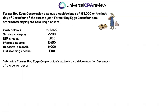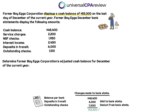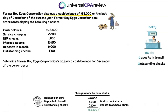Let's take a look at Farmer Boy Eggs performing this bank reconciliation — a very common multiple choice or task-based simulation question. They want to know if you can calculate the actual balance. Farmer Boy Eggs has a cash balance of $55,000 on the last day of December of the current year — that's what's reported in the books — while the bank statements show a cash balance of $48,400. We always start on the bank statement side since it's the shorter list, remembering Dottie's D and O.